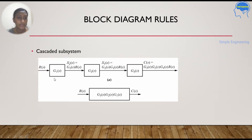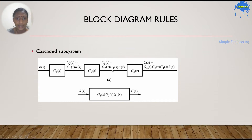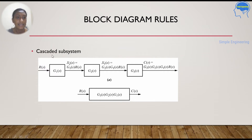Next is the cascaded subsystem. You have three different blocks: G1(s), G2(s), and G3(s). R(s) is your input given to G1(s). The input to G2(s) will be R(s)·G1(s), denoted X2(s). The output of G2(s) will be G1(s)·G2(s)·R(s), denoted X1(s). The output of G3(s) will be G3(s)·G2(s)·G1(s)·R(s) = C(s). So finally, these three blocks can be cascaded and written as G3(s)·G2(s)·G1(s) with input R(s) and output C(s).